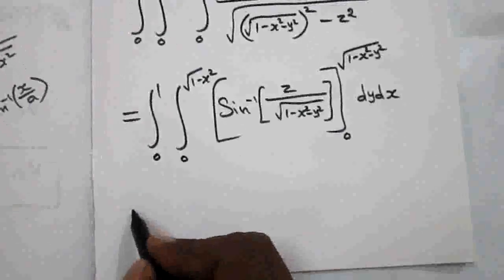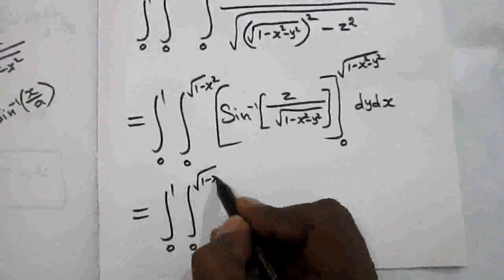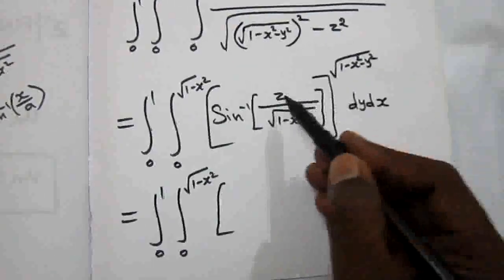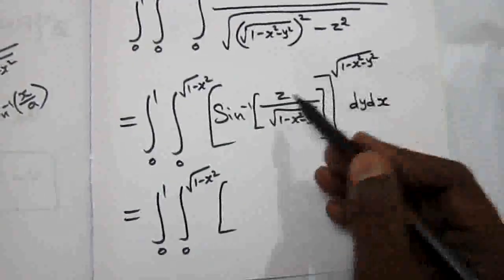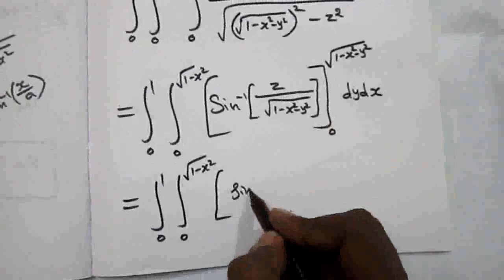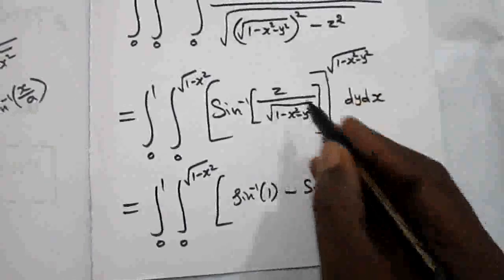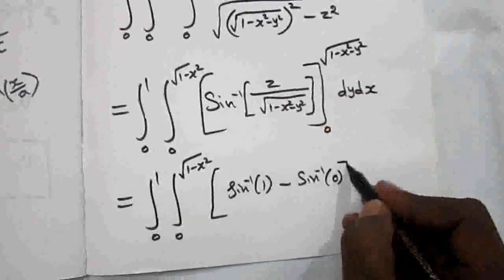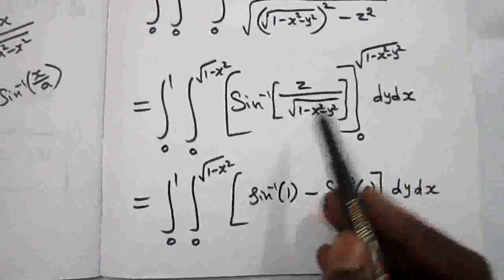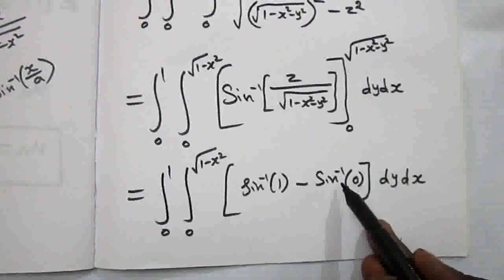Now substituting the limits. Integral 0 to 1, integral 0 to root of 1 minus x squared. Substituting the upper limit for z: root of 1 minus x squared minus y squared — this and a cancel — giving sin inverse of 1. Minus the lower limit, substituting z equals 0, giving sin inverse of 0, which is 0. Sin inverse of 1 is pi by 2, sin inverse of 0 is 0, so the result is pi by 2, remaining dy dx.